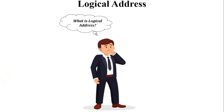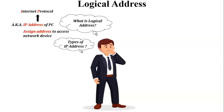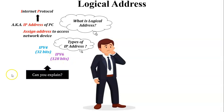Next is the logical address, or IP address. A logical address is one kind of address assigned to a network device to access it from the same network or from a different network. Logical address is also known as the IP address of a PC, router, or switch. The full form of IP is Internet Protocol. There are two types of IP address: IPv4 and IPv6.